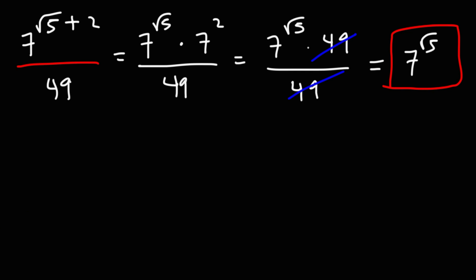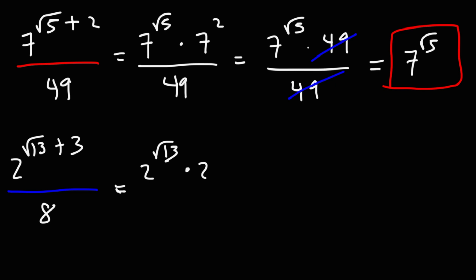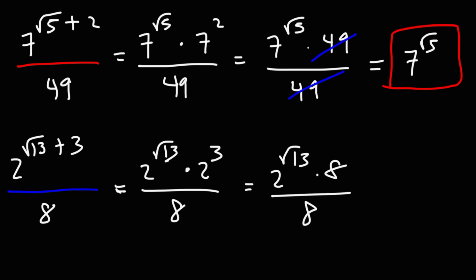For 2^(√13+3) divided by 8: expand the top as 2^√13 times 2³ divided by 8. 2 to the third is 2 times 2 times 2, which is 8. The 8s cancel, giving us the final answer of 2^√13.